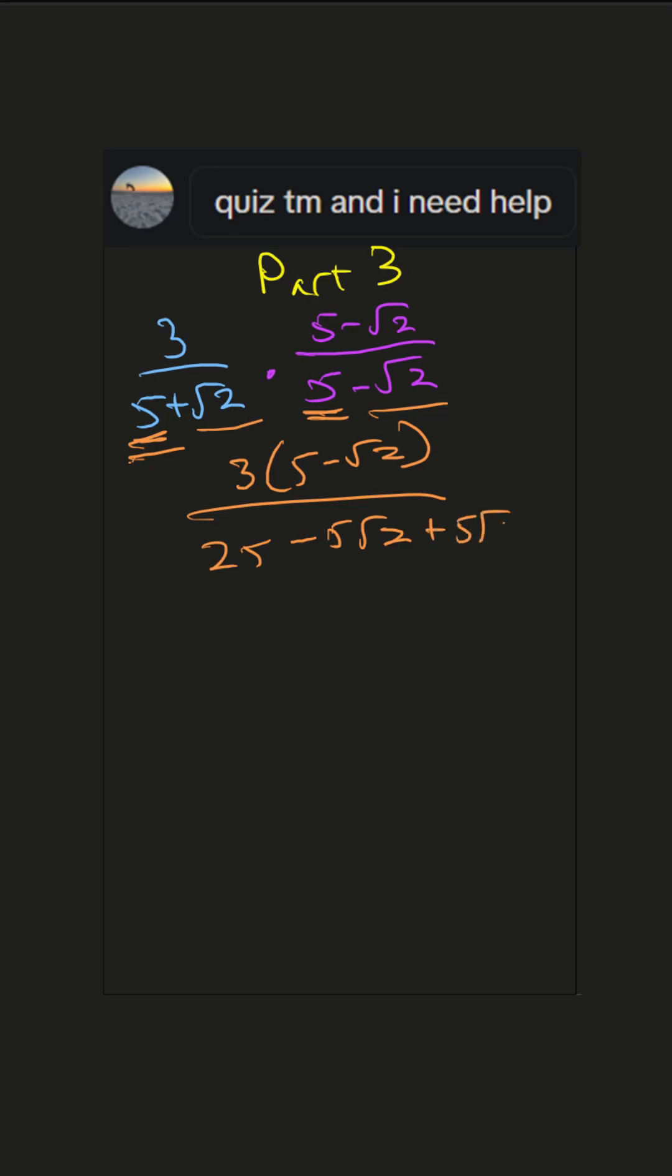Inner, 5 times positive root 2 is 5 root 2, and last, root 2 times negative root 2 is just negative 2. Simplify so the numerator is 3 times 5 minus root 2 still. Denominator, these two cancel. We have 25 minus 2, which is 23.